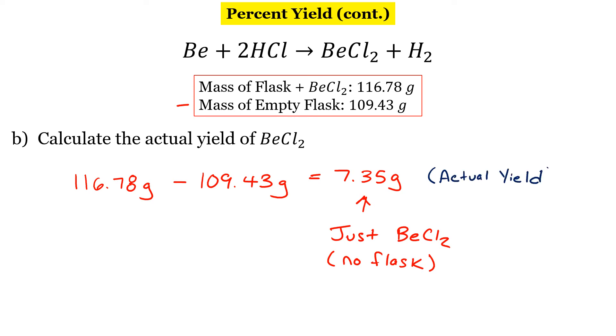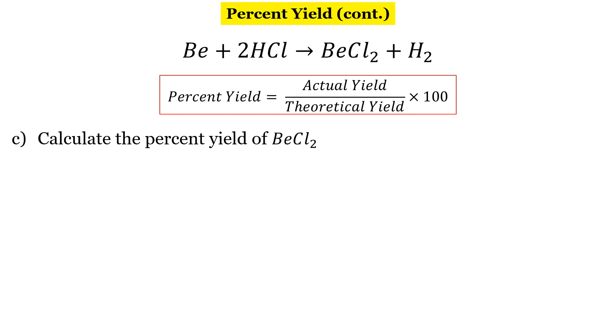Our actual yield is what we get when we do the reaction. So now percent yield, we're going to compare the actual yield to the theoretical yield. And you need this formula here: Actual over theoretical times 100. And we want to make sure when we put this in our calculator, we use parentheses here.